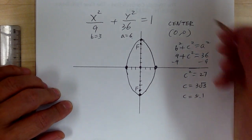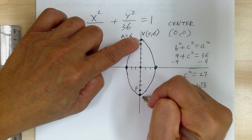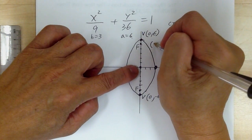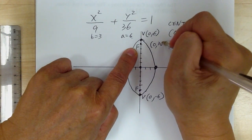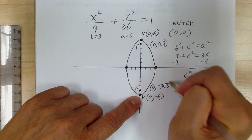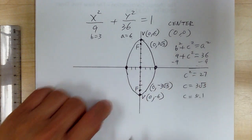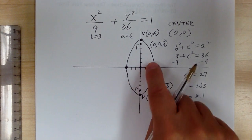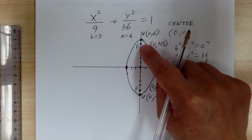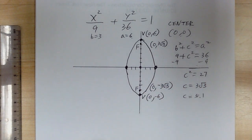Now label everything. The center is (0,0). The vertex going up is (0,6) and the vertex going down is (0,−6). The foci: going up in the y direction gives (0, 3√3), and going down gives (0, −3√3). Those are your vertices and foci. Note: if you have one point it's called a focus; if you have more than one it's called foci.